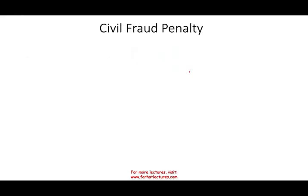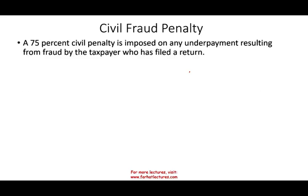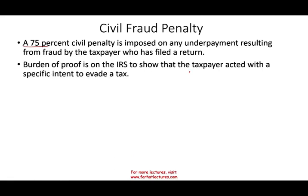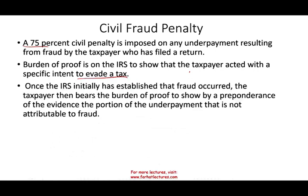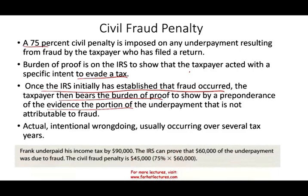Just briefly, the civil fraud penalty: a 75% civil penalty is imposed on underpayment resulting from fraud by the taxpayer who filed a return. Fraud is intentional wrongdoing — not a mistake, not negligence, done deliberately over time. The initial burden of proof is on the IRS to show the taxpayer specifically intended to evade tax. Once the IRS establishes fraud occurred, the taxpayer then bears the burden of proof to show the portion of underpayment not attributable to fraud.